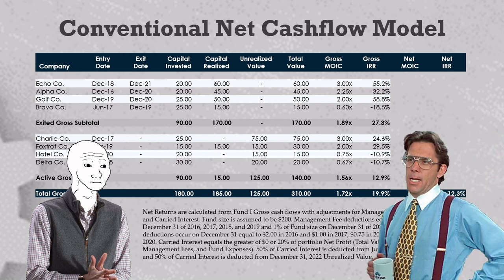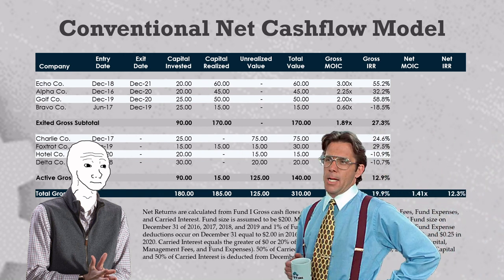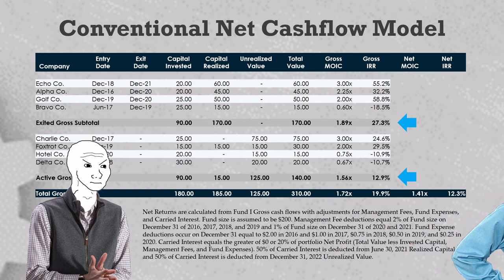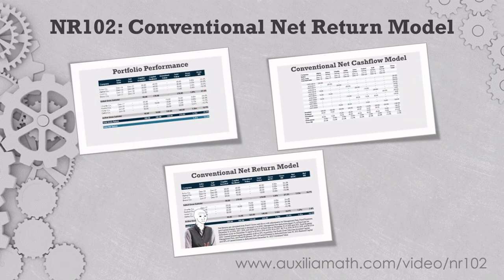Or so we think, because that's when the boss comes in and says: great job on that hypothetical net return model, but I just got off the phone with Fund Legal Counsel and they said that since we show gross returns for the active and exited investments in the table, we should also show net returns to make sure we're compliant with these new SEC marketing rules. So I'm going to need you to go ahead and come in on Saturday and update those models. Okay, this really shouldn't be too bad. We just need to split the portfolio into an exited cohort and an active cohort and then run through all the fee, expense, and carry adjustments like we did last time.